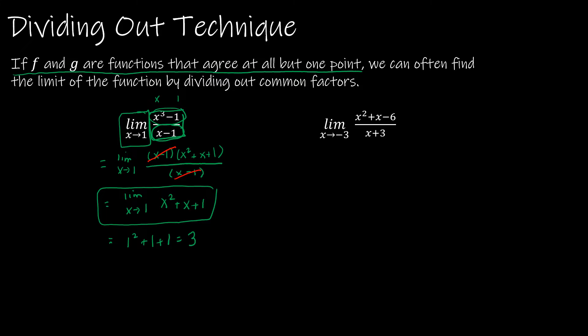If f and g are functions that agree at all but one point, we can often find the limit of one function by dividing out common factors and finding the limit of the new function. Let's do one more practice — feel free to pause and try it on your own.